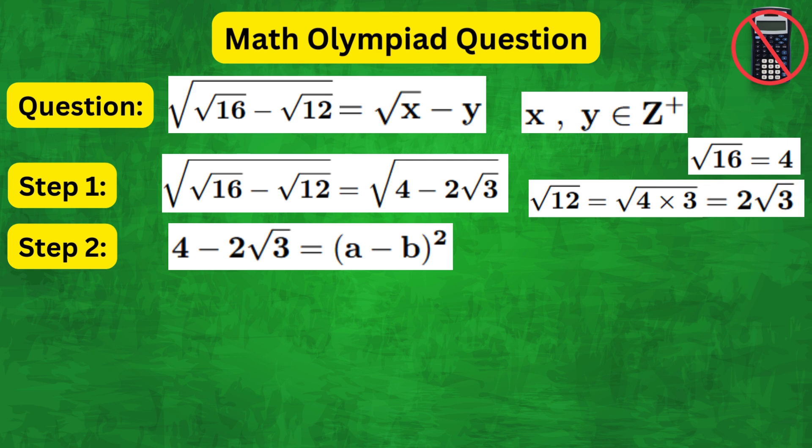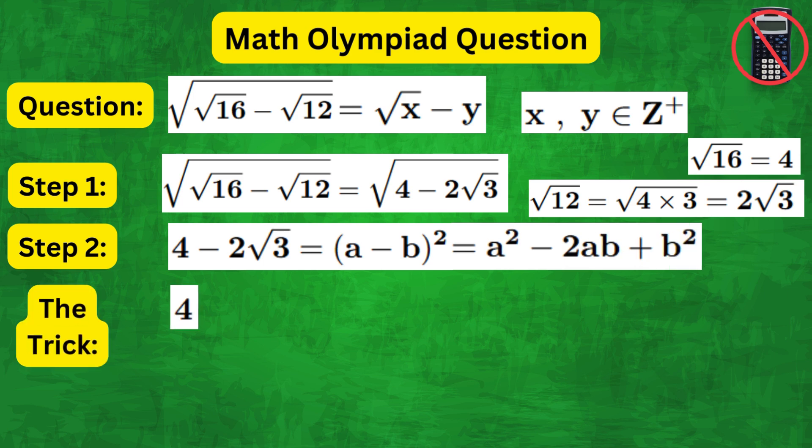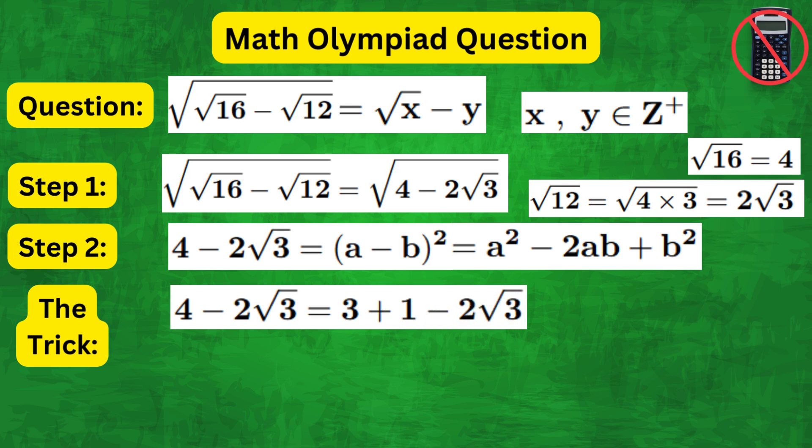If we expand a minus b whole squared, we get a squared minus 2ab plus b squared. The trick is that we can write 4 minus 2 root 3 as 3 plus 1 minus 2 root 3 times root 1.